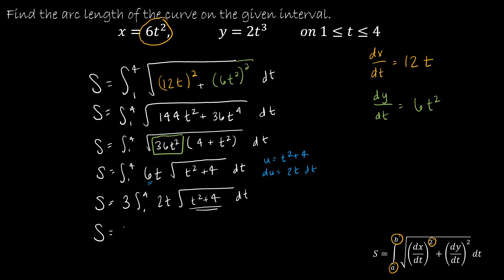And my pattern says, okay, I've got 3 on the outside. Then if I integrate essentially u^(1/2), I get u^(3/2) divided by 3/2, which is like u^(3/2) times 2/3.